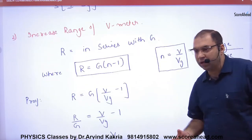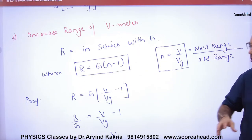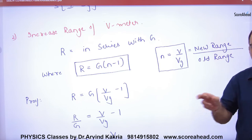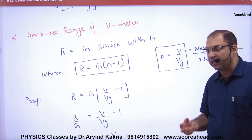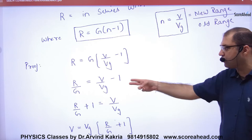In that way, if I make a voltmeter, then what will I do? High resistance R in series. So the resistance R, which we remembered, was in this form.